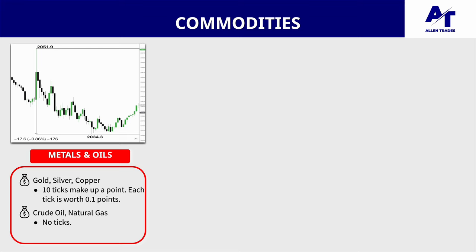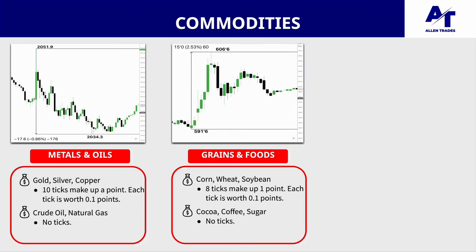Moving on to commodities, which are split into three categories. First: metals and oils. Metals include gold, silver, and copper — all measured on the futures market in ticks and points, where 10 ticks make up a point and each tick is worth 0.1 points. For oils — crude oil and natural gas — there are no ticks; they just move in points.